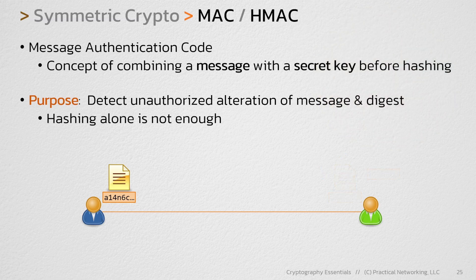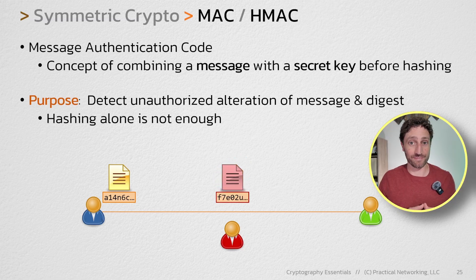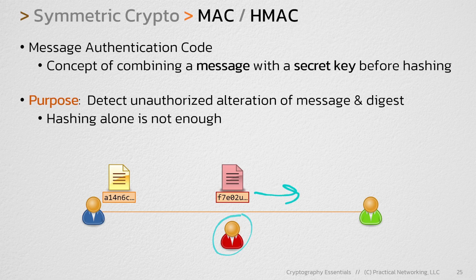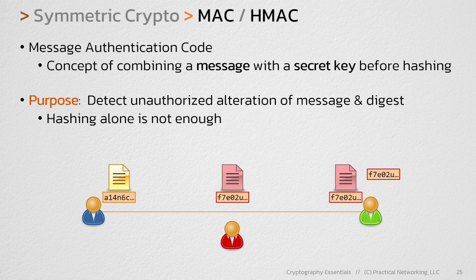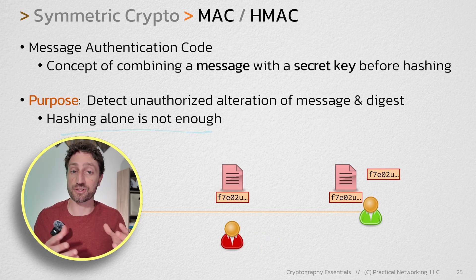Let me show you why. Let's say you have an attacker sitting in the middle between this blue user and the green user. This attacker captures the message and digest as it's being sent on the wire. If this red user wants to send a spoofed message, all they have to do is change the message and then recalculate the digest. Remember, anyone can do hashing — the hashing algorithms are all public knowledge. So it's very easy for the red user to calculate a digest on the modified message, forward it to the green user, and the green user will end up with the same digest calculated by the red user. That is why hashing alone is not enough to send packets securely across the wire.